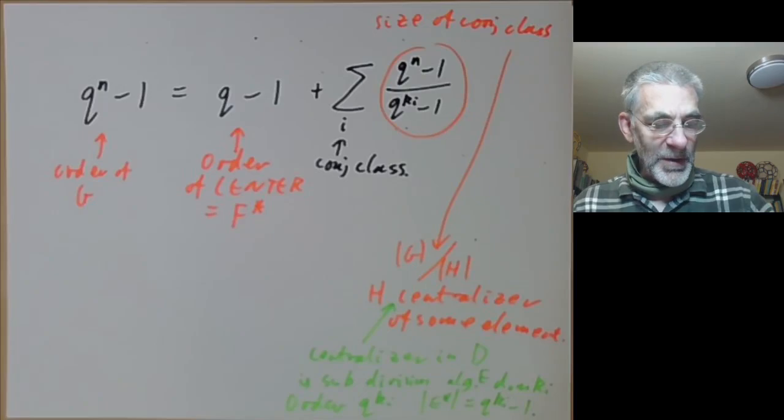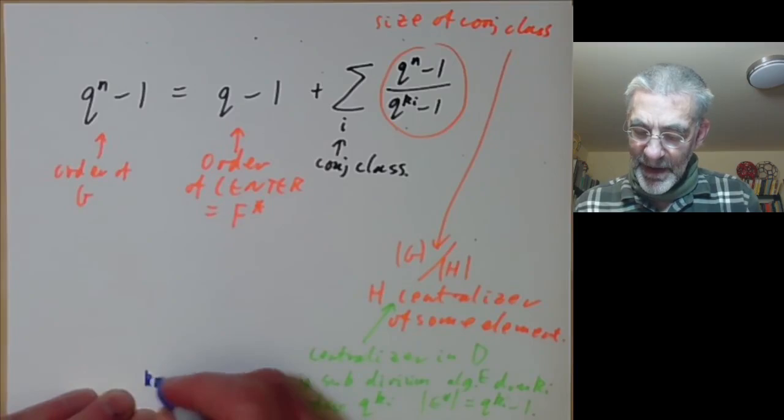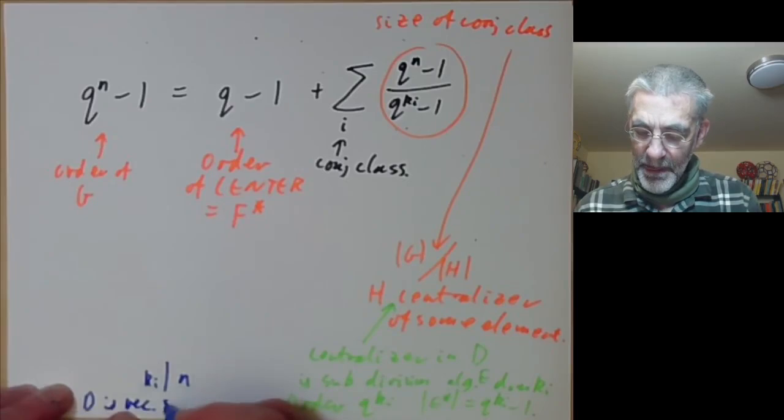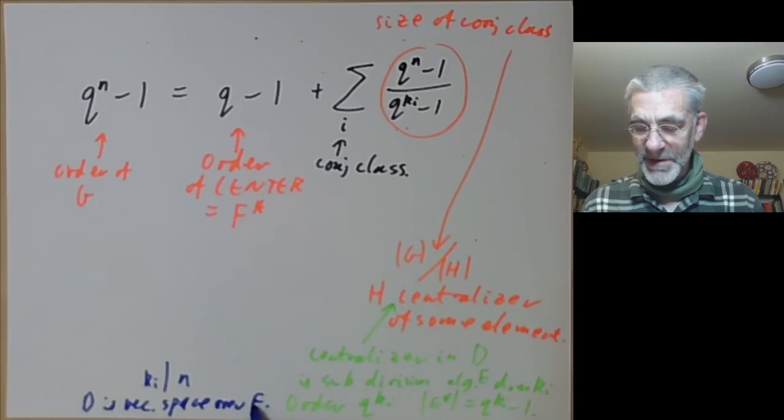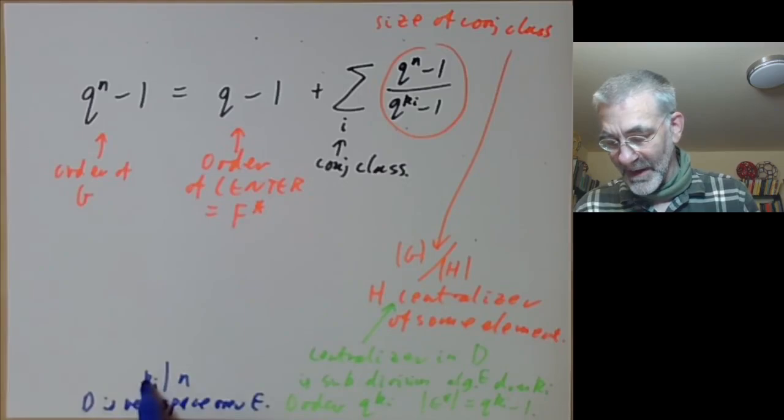So we should also note that ki divides n because D is a vector space over e. And e isn't actually a field, it's a division algebra, but you can still define vector spaces over division algebras. And we find D is a vector space over this division algebra, and therefore ki divides n.